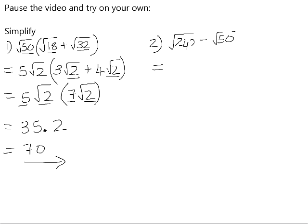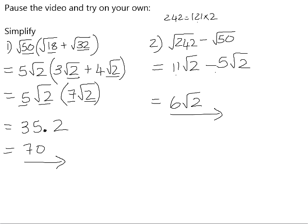Number 2. The square root of 242. 242 is actually equal to 121 times 2. So the square root of 121 is 11, so it becomes 11 root 2. Square root of 50, we've already seen, is 5 root 2. And 11 subtract 5 gives us 6 root 2 as our final answer.